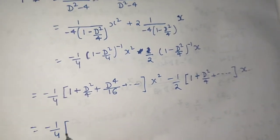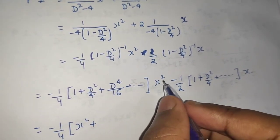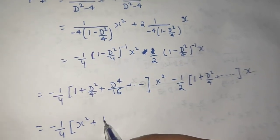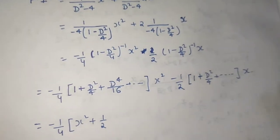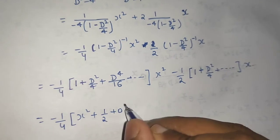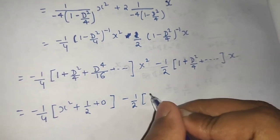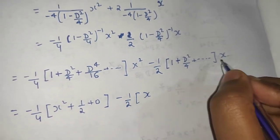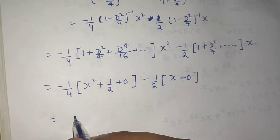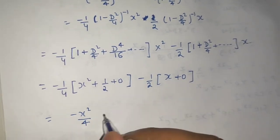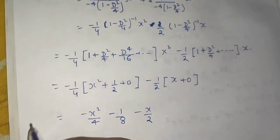So, minus 1/4 multiplied inside gives: x² plus the second derivative contribution — first derivative 2x, second derivative 2, so 2/4 equals 1/2. No need to find further terms since the third derivative and all higher derivatives are 0. Then minus 1/2 times (x plus 0). This gives the particular integral as minus x²/4 minus 1/8 minus x/2.